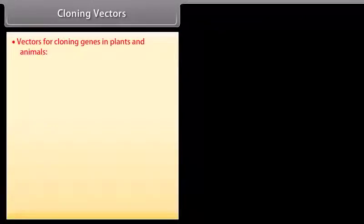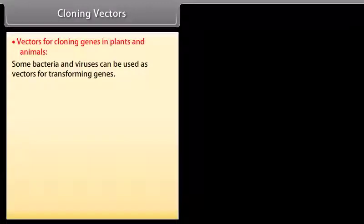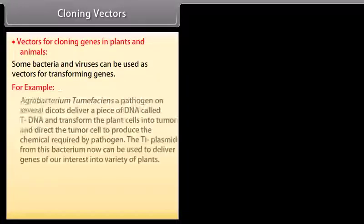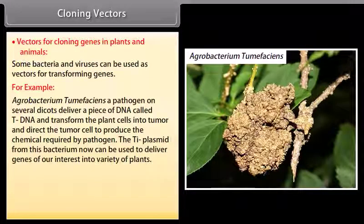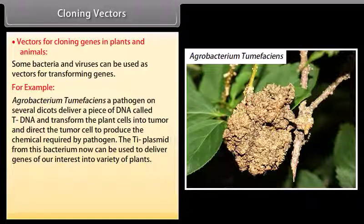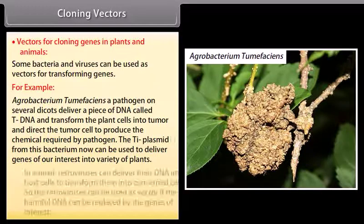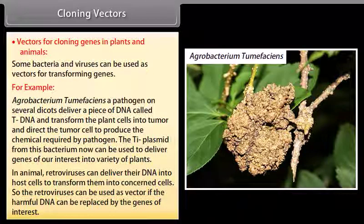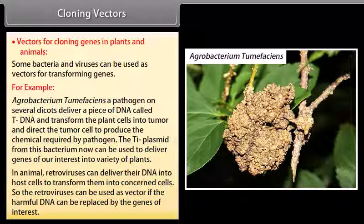Vectors for cloning genes in plants and animals. Some bacteria and viruses can be used as vectors for transforming genes. For example, Agrobacterium tumefaciens, a pathogen on several dicots, delivers a piece of DNA called T-DNA and transforms the plant cells into tumor cells, directing tumor cells to produce the chemicals required by the pathogen. The Ti plasmid from this bacterium can now be used to deliver genes of interest into a variety of plants. In animals, retroviruses can deliver their DNA into host cells to transform them. So retroviruses can be used as vectors if the harmful DNA can be replaced by the genes of interest.